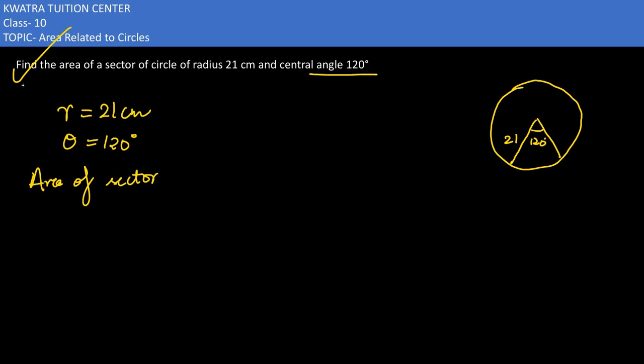And area of sector what will be? The formula is theta over 360 into pi r square. Theta की value substitute करोगे 120, 360 is there, pi की जगह क्या आजाएगा, 22 by 7. R square is nothing but 21 into 21.